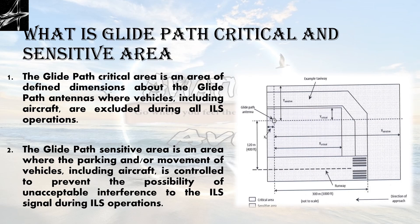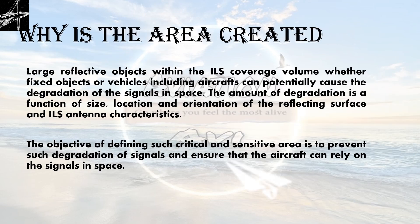Since it's a frequency-emitting device, it has a critical and sensitive area. The Glide Path Critical Area is an area of defined dimensions about the Glide Path antenna. The Sensitive Area is an area where parking and/or movement of vehicles including aircraft is controlled to prevent unacceptable interference to the ILS signal. Large reflecting objects within the ILS coverage volume — fixed or moving — can potentially cause degradation of signals in space. The amount of degradation is a function of size, location, and orientation of the reflecting surface and ILS antenna characteristics.